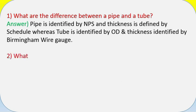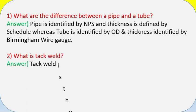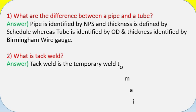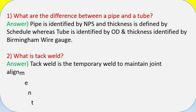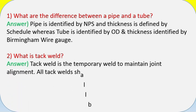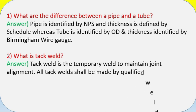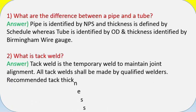Question 1: What is the difference between a pipe and a tube? Answer: Pipe is identified by NPS and thickness is defined by schedule, whereas tube is identified by OD and thickness is identified by Birmingham Wire Gauge.